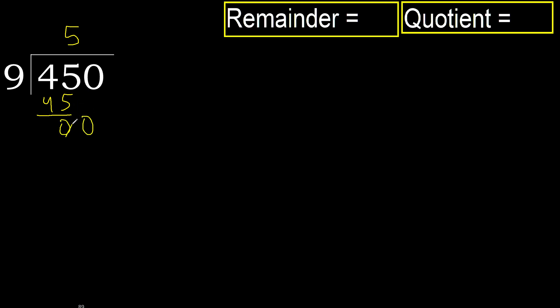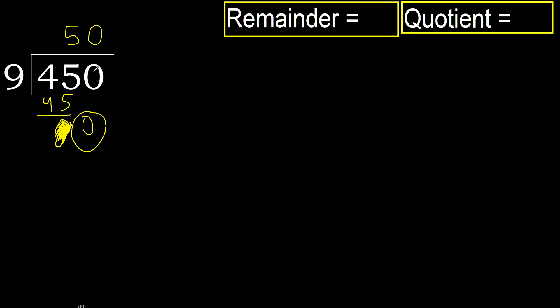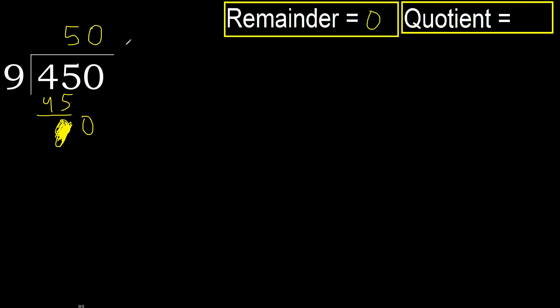Next, bring down the 0. 0 is less, therefore there is no next number — finish it. Always complete with 0. Complete because we finish with this number. 450 divided by 9 is 50.